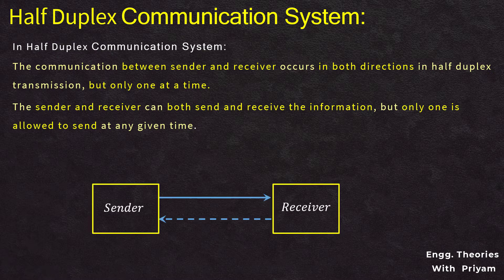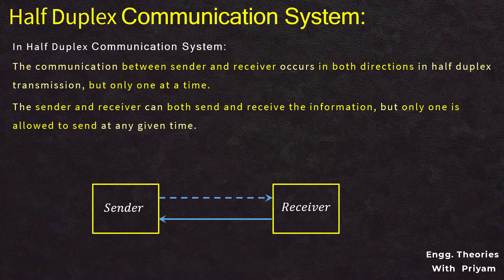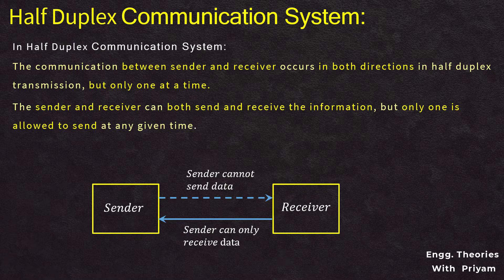When the sender is sending information, the receiver can only receive and cannot send; similarly, when the receiver is sending, the sender can only receive and cannot send. Half duplex can be thought of as a one-way road where a vehicle traveling in the opposite direction must wait until the road is empty before passing through. At any given point, it effectively functions as a simplex channel where the transmission direction can be switched.